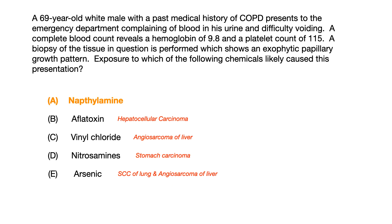So here's what we've got. The correct answer is naphthalamine because naphthalamine is associated with urothelial carcinoma of the bladder. But if you look at the other answer choices, you should also know what cancers those carcinogenic chemicals are associated with.